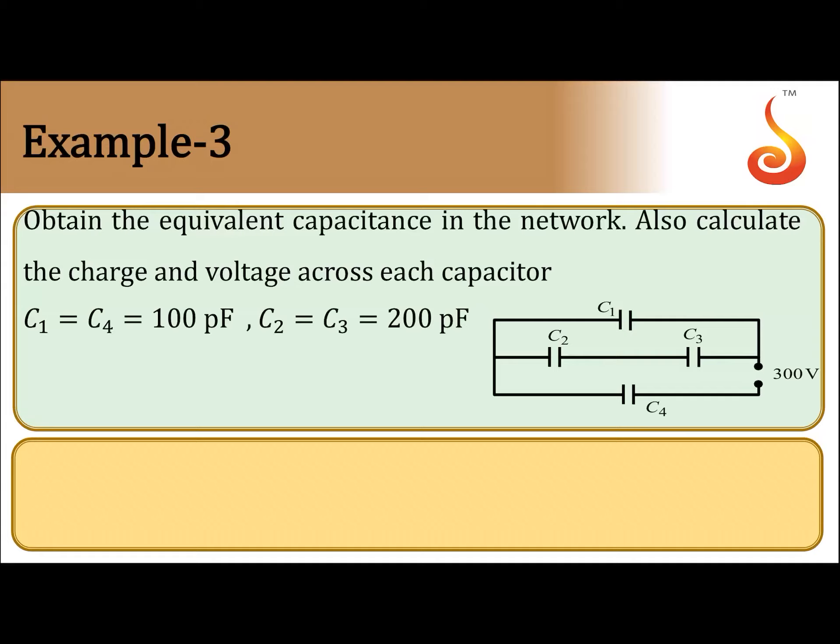Obtain the equivalent capacitance in the network, also calculate charge and voltage across each capacitor. Given: C1 equals C4 equals 100 picofarad, C2 equals C3 equals 200 picofarad.